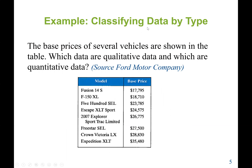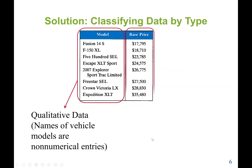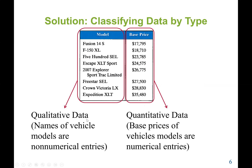Here is an example where we classify data as either qualitative or quantitative. In this table, we have a model — the names of the vehicles — and we have the base price, which is the price of the vehicles. The models are names, so they are qualitative data — non-numerical entries. The base price is a numerical value, so that is quantitative.